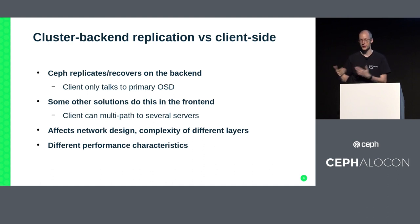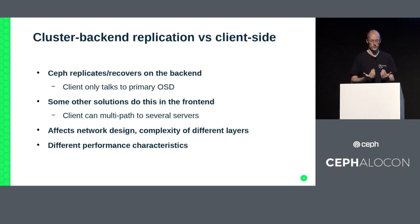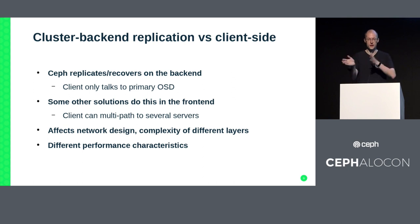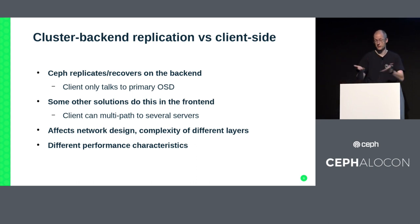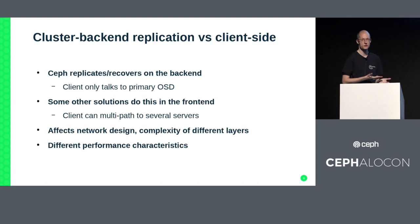Ceph replicates on the back end - the client only ever talks to the primary OSD, which knows it has a good copy of the data. This simplifies things and is another side effect of the consistency model. A lot of algorithms in Ceph are based on the assumption that everything balances out at scale, especially how Crush distributes data across drives. The data placement is pseudorandom, which is great because the client doesn't have to ask a server where the data is - it just runs the same algorithm and is pointed to the right server.